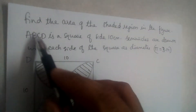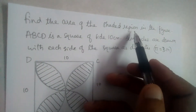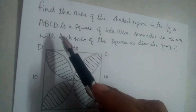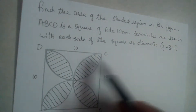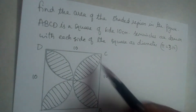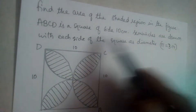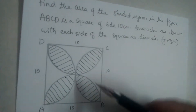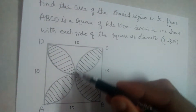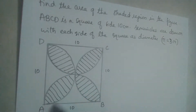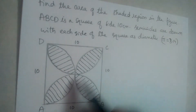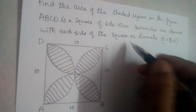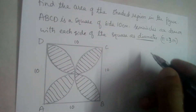Let us solve this problem: find the area of the shaded region. ABCD is a square of side 10 centimeters, and semicircles are drawn with each side of the square as diameter. So this is a semicircle, this is also a semicircle, this is a semicircle, and this is a semicircle — semicircles are drawn on each side of the square as diameter.